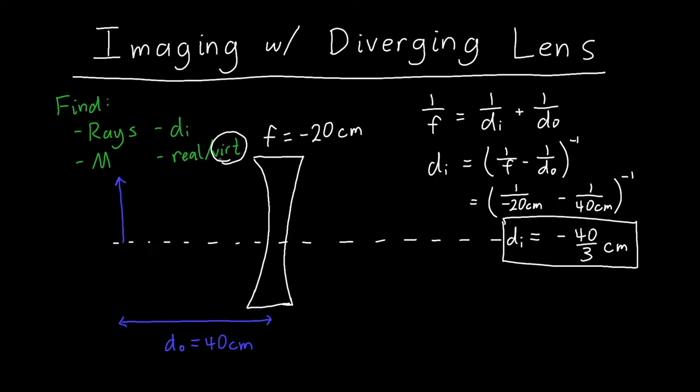We know di. While we're at it, we can calculate the magnification using our equation for a single lens, which is just negative di over do. Here di is negative 40 over 3 centimeters and do is 40 centimeters, with a negative sign out front. The negatives will cancel and give us a positive sign, the centimeters will cancel, 40s cancel, and so our magnification is one-third.